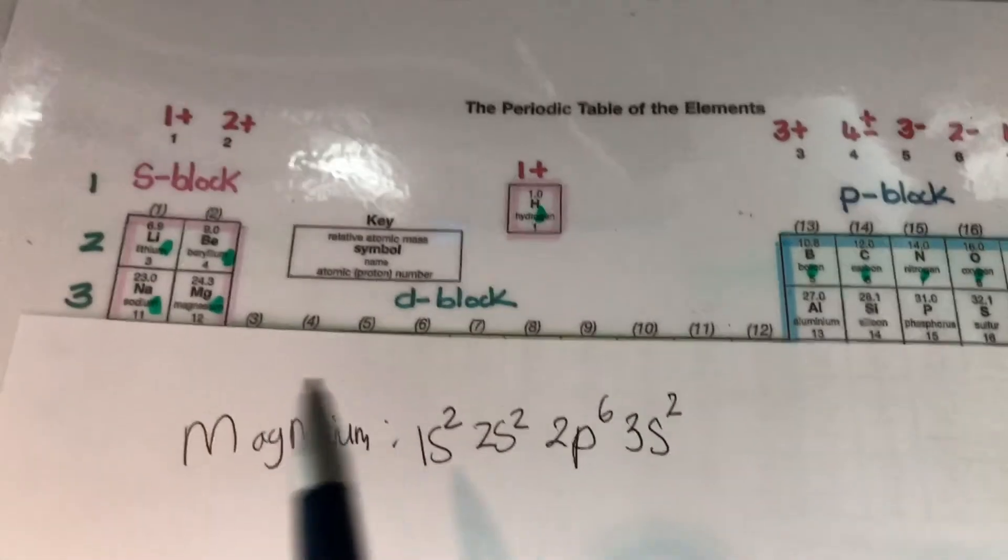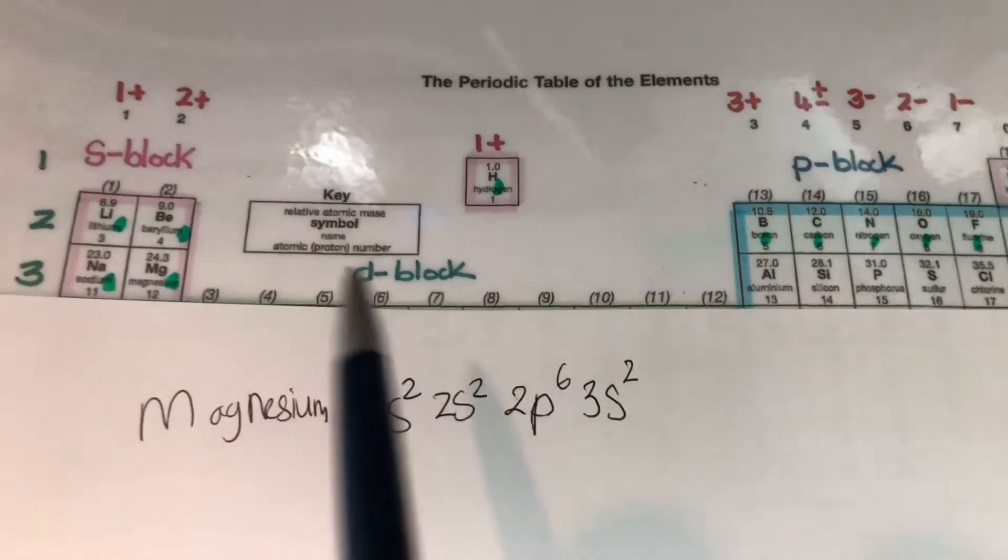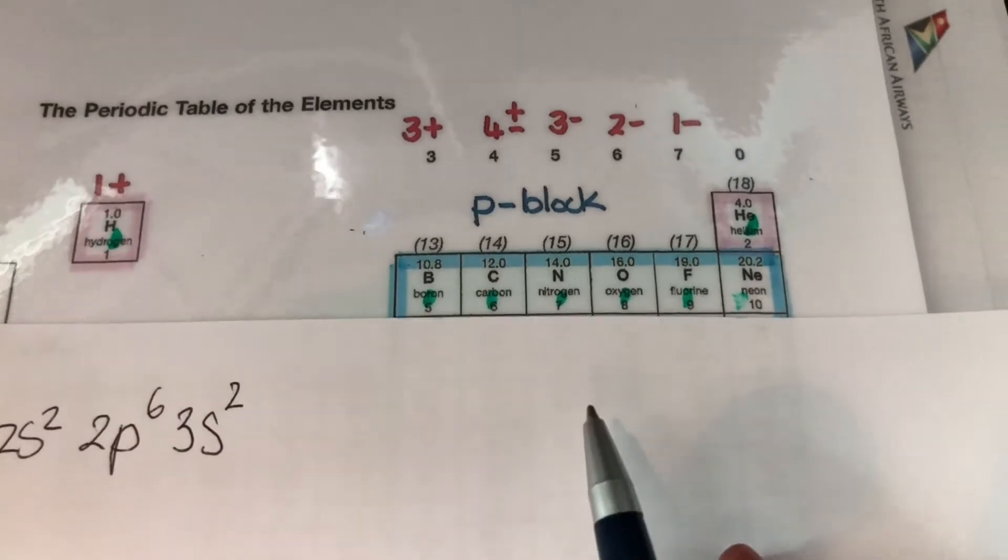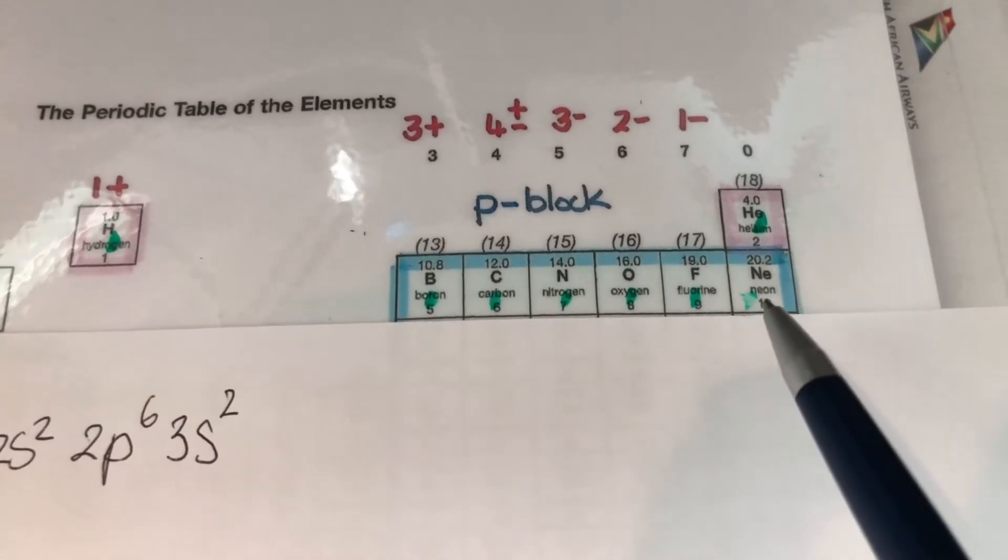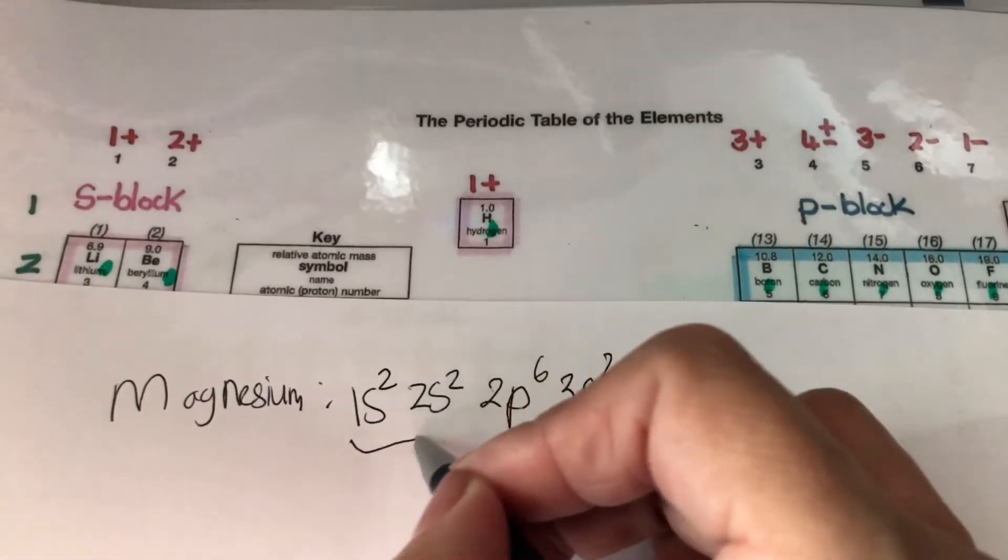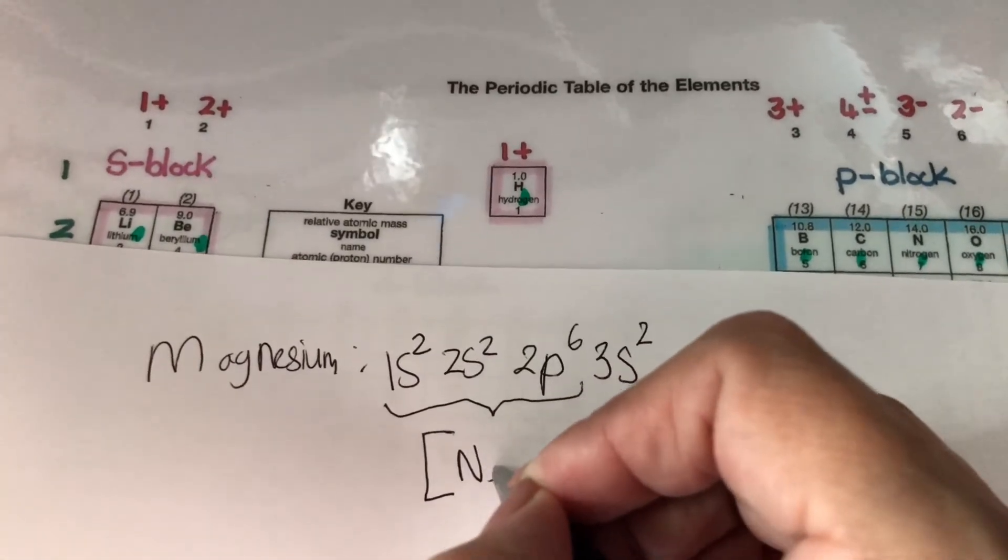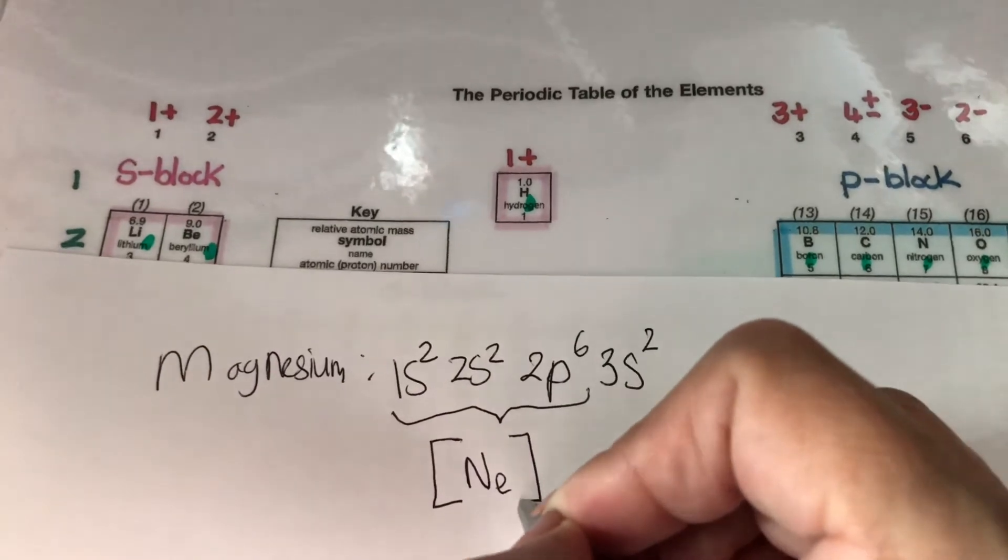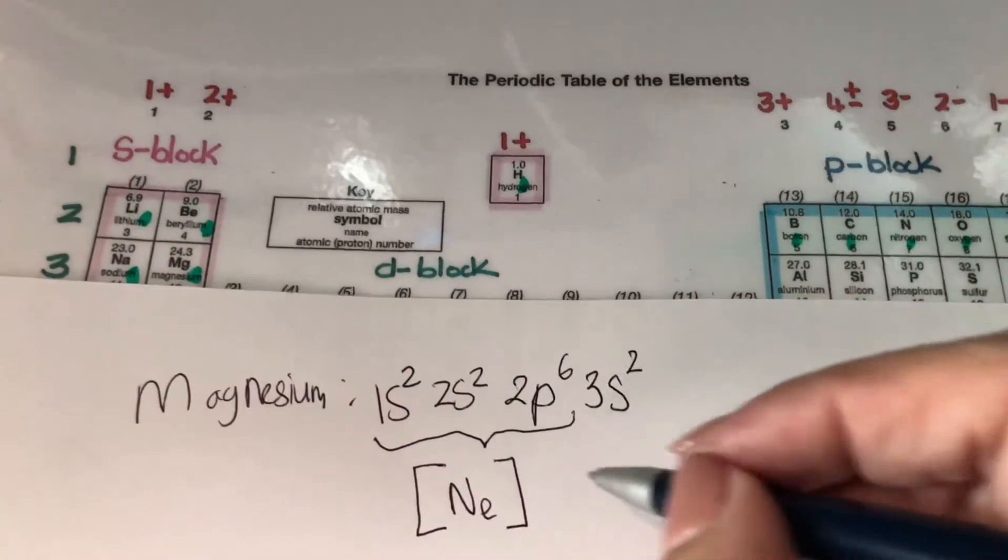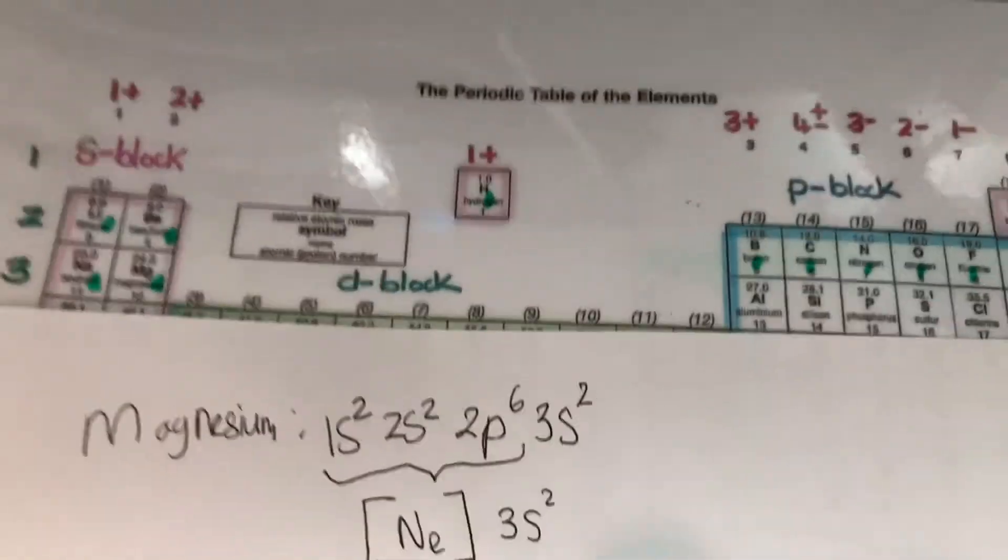So instead of writing all of this out, if I want to write an abbreviated SP notation for magnesium, all I need to do is go back and find the very first noble gas before magnesium and I see that it is neon. In other words, instead of writing this whole section over here, I can replace it with the noble gas element, which is neon and then just include the 3S2. Right, so that's quite an easy one.